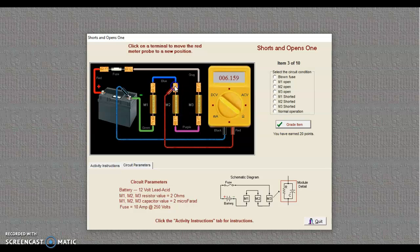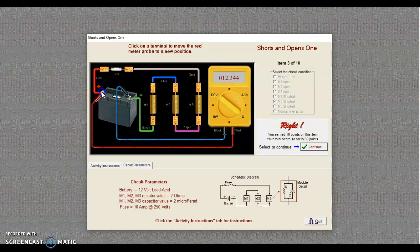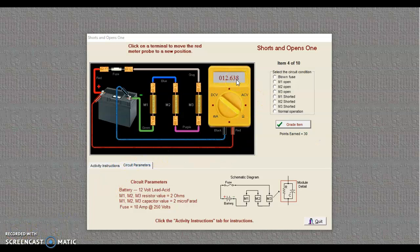Just to clarify, notice that on either side here, we're seeing no change. So M2 is shorted. And we'll grade that item. And we're good. Before I hit continue, return my probes.